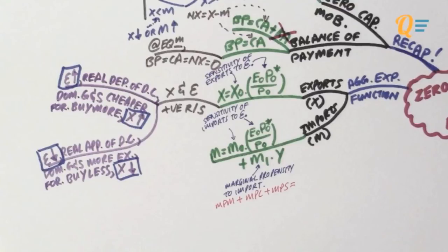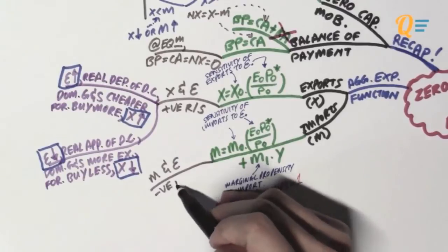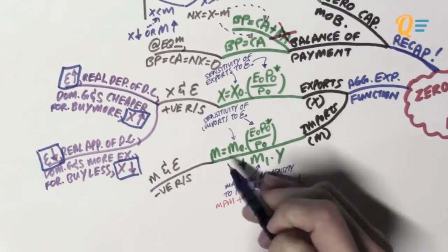So knowing this, if I'm going to take the marginal propensity to import plus the marginal propensity to consume plus the marginal propensity to save, what do you think I'm going to get? Well, if you have guessed the number one, then you're absolutely right. Well, the reason for this is quite simple. With all the money that we have, we can either spend it on consumption, we can either save it or we can either spend it on foreign goods and services. So that's pretty simple. So the important points of the imports function you need to know is that imports and real exchange rate actually have a negative relationship.